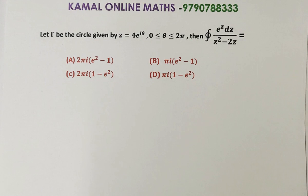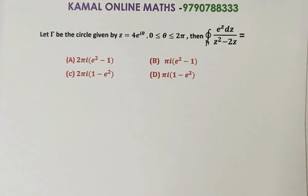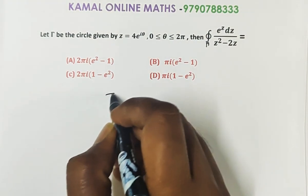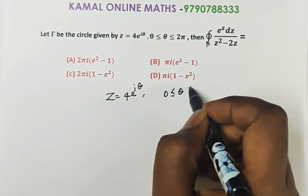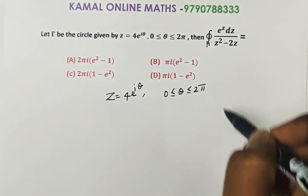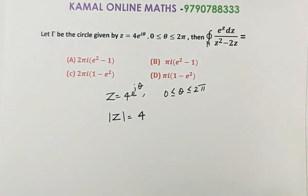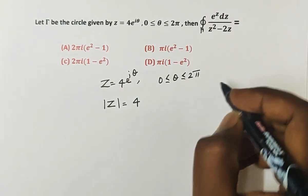Next question: let gamma be the circle given by z = 4e^(iθ), where θ varies from 0 to 2π. Then find the integral over gamma of e^z dz divided by (z² − 2z). The contour gamma is the circle with |z| = 4, centered at the origin with radius 4 units.